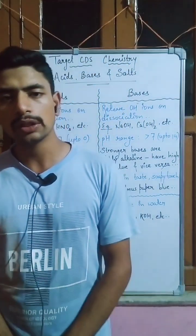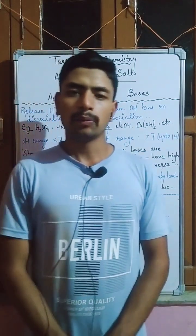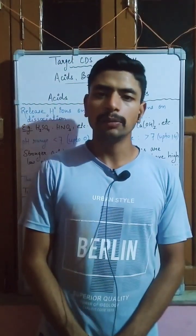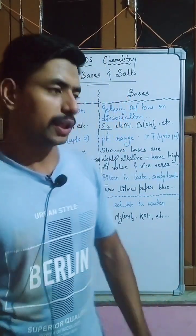When bases dissociate, they release OH⁻ ions. Common examples of bases are sodium hydroxide, potassium hydroxide, magnesium hydroxide, calcium hydroxide, etc.